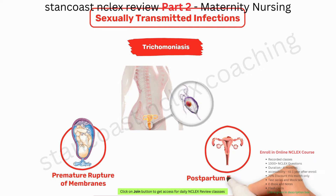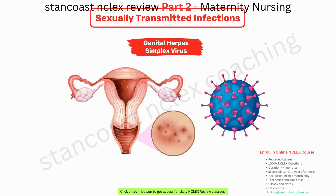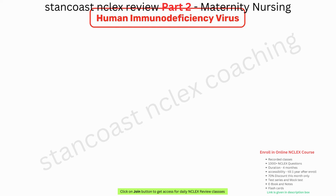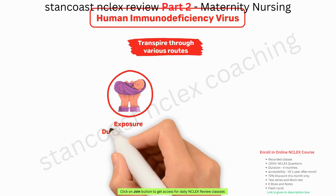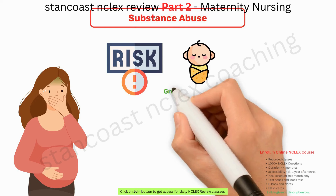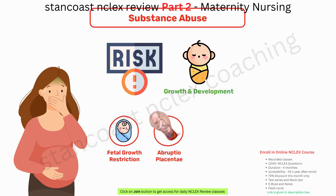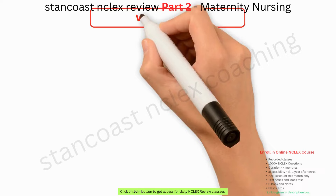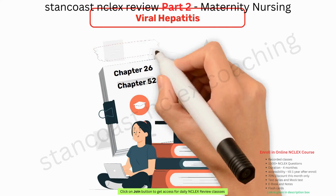Genital herpes simplex virus, characterized by painful lesions, can entail grave consequences, accentuating the need for judicious assessment and management during pregnancy. HIV transmission can transpire through various routes including exposure during childbirth and breastfeeding; preventive measures may encompass the perinatal administration of zidovudine. Substance abuse during pregnancy poses a substantial risk to fetal growth and development, potentially leading to fetal growth restriction, abruptio placentae, and fetal bradycardia. It is imperative to eschew teratogenic substances and over-the-counter medications without HCP approval. Viral hepatitis is an additional cause for concern.